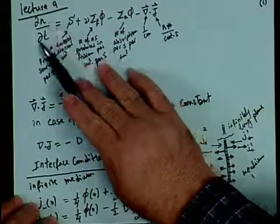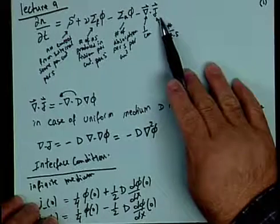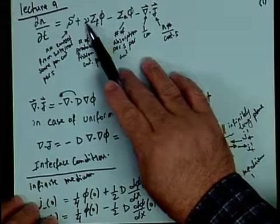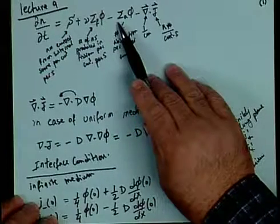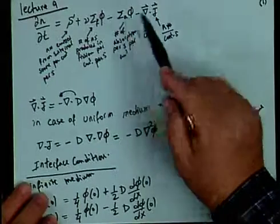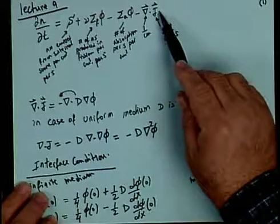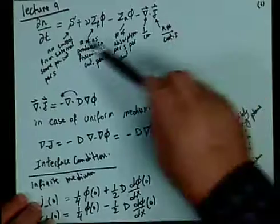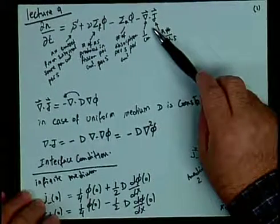When we derive it, we have a time-dependent part, and then we have a balance part. So we have the source term, we have the source from fission, which is nu sigma fission times phi. And we have the leakage and absorption, which represents the destruction of the neutrons. So you have sigma absorption phi minus divergence of J. This equation cannot be called the diffusion equation — it's just a continuity equation.